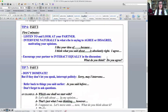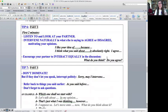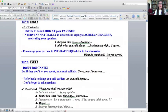So tip six is for the first two minutes: listen to and look at your partner. Intervene naturally in what he or she is saying and agree and disagree, motivating your opinions. For example, I like your idea of because, or I think what you said about is absolutely right, I agree. Encourage your partner to interact equally with the discussion by saying what do you think? Do you agree? Do you have a similar opinion? So you have to encourage your partner to interact in the conversation.